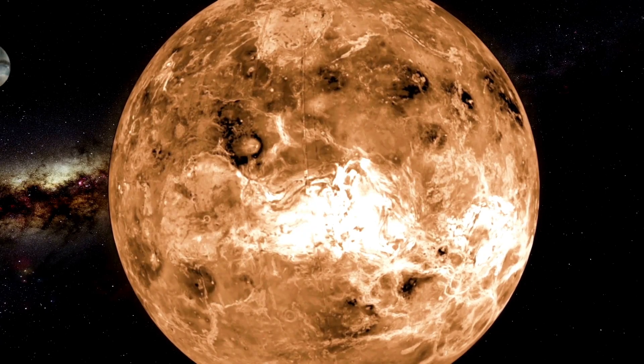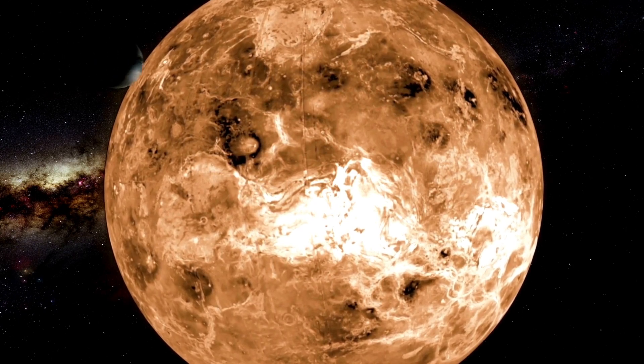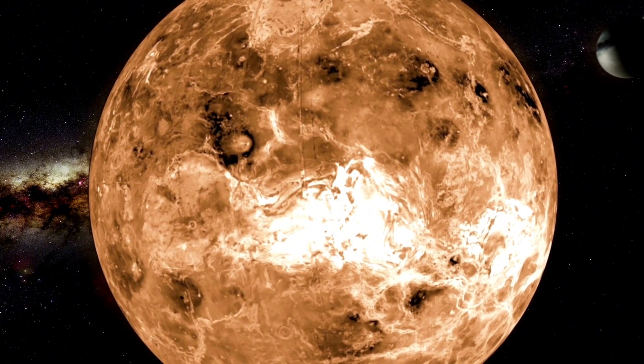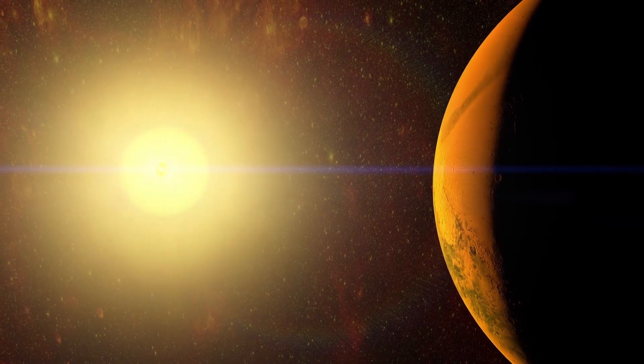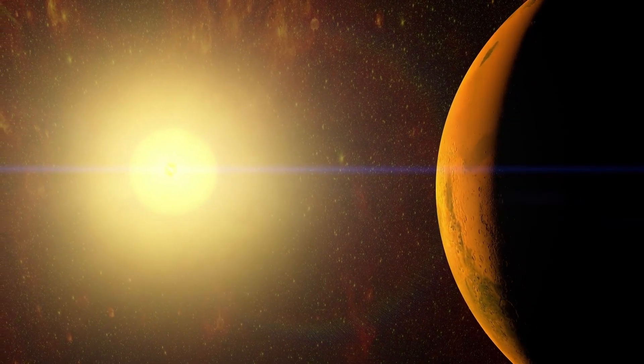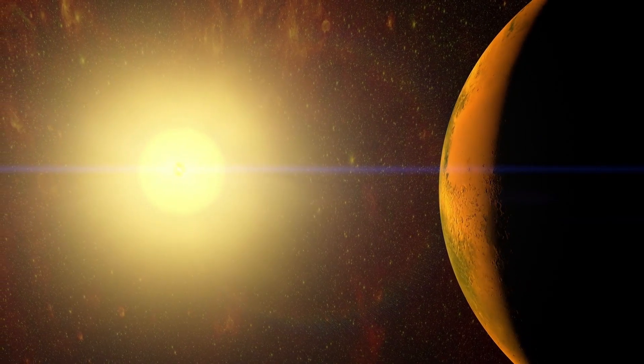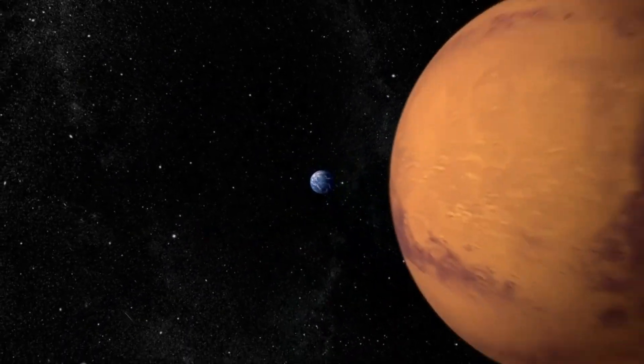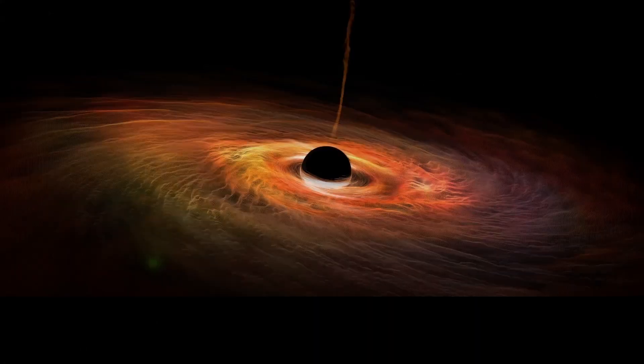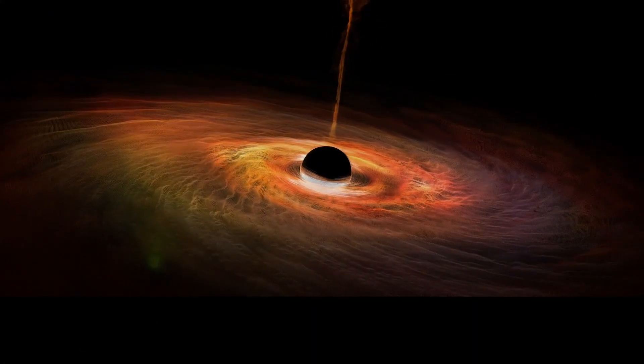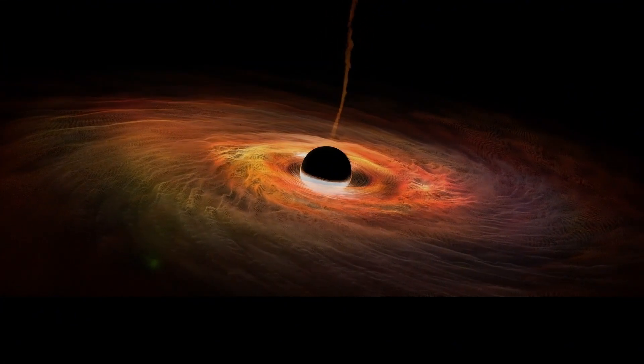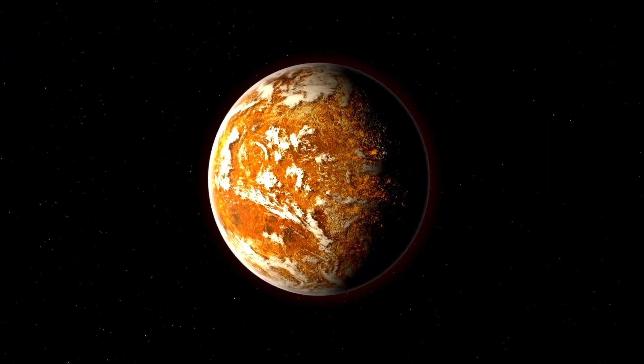The challenges posed by Proxima b's environment are significant. Its host star, Proxima Centauri, is a red dwarf known for its intense solar flares, which can emit bursts of X-rays and ultraviolet radiation. These flares could strip away the planet's atmosphere over time, exposing its surface to the harshness of space. If Proxima b retains any atmosphere, it likely requires a strong magnetic field to shield it from radiation. Without such protection, the surface environment would be hostile to life as we know it.